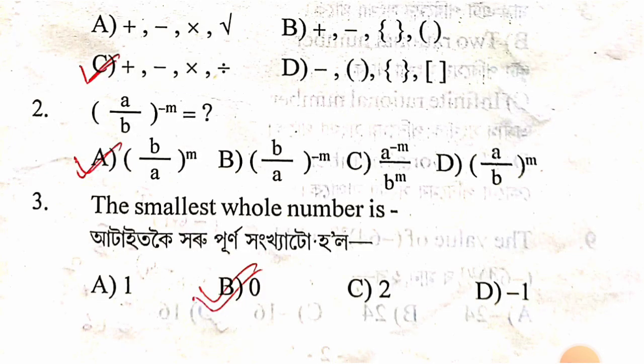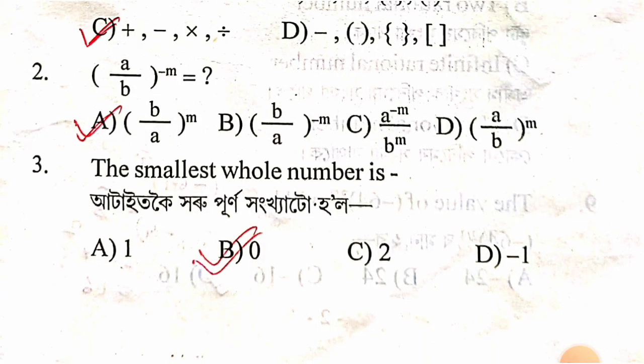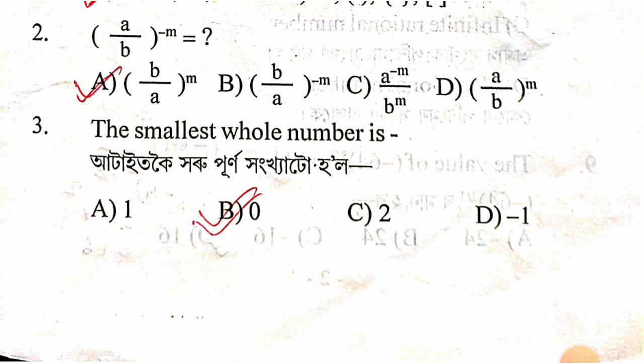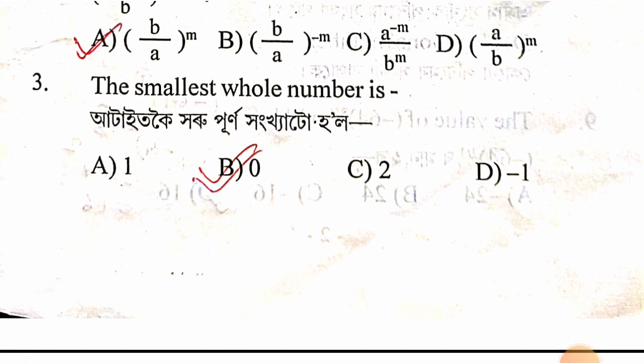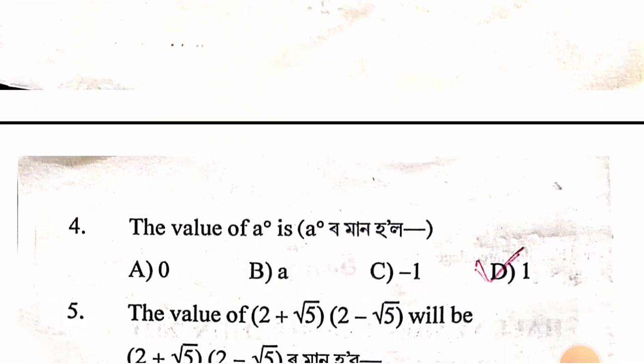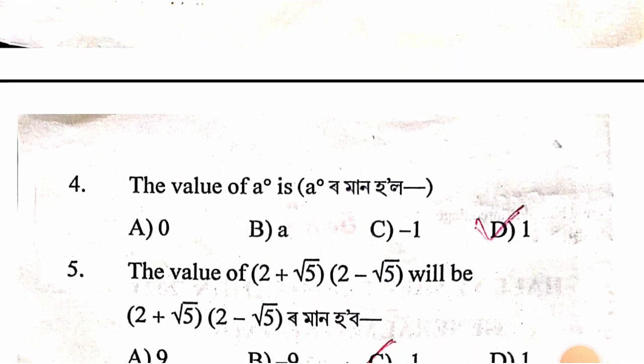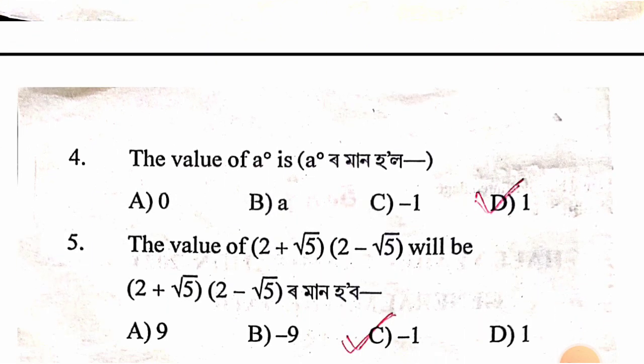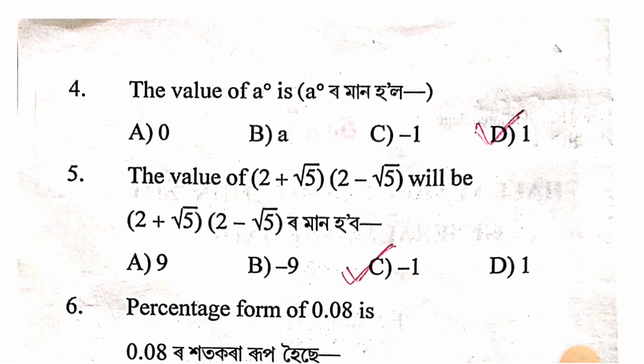Second question: the expression a/b to the power minus m. Third question: the value of a/0 — the answer is option D.